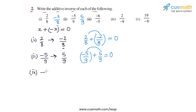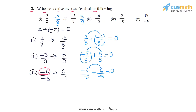In part 3, the rational number is minus 6 by minus 5. We invert the sign of the numerator, which gives us 6 by minus 5. So the additive inverse of minus 6 by minus 5 is 6 by minus 5. We can verify: the denominators are the same, and numerators minus 6 and 6 add to 0. In rational numbers, if one of the numerator or denominator is negative, we write the negative sign in the numerator. So 6 by minus 5 can also be written as minus 6 by 5.